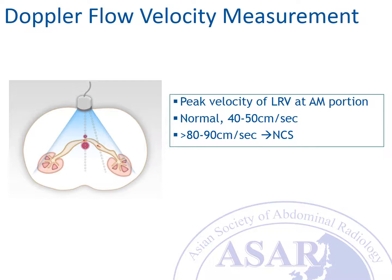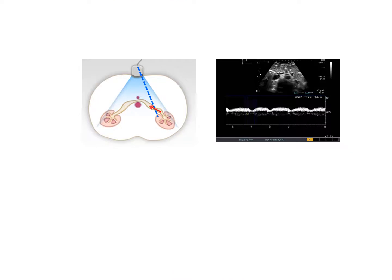There are two technical points we need to keep in mind in this Doppler ultrasound. With the usual neutral position of the transducer, we do not have problems in getting clear Doppler spectra from the hilar portion of the left renal vein, because the Doppler angle is within the optimal range.